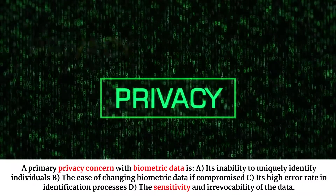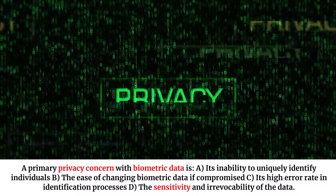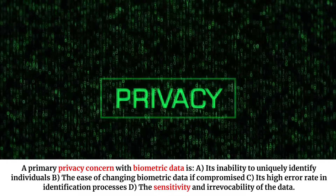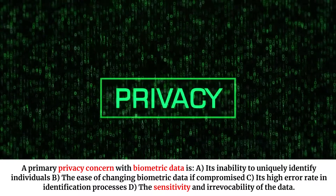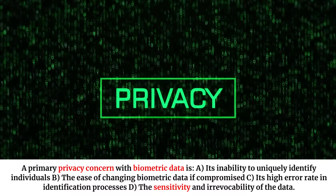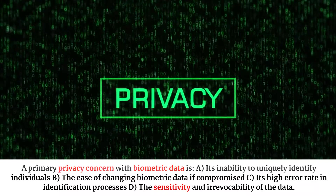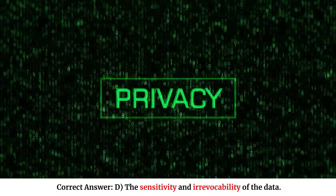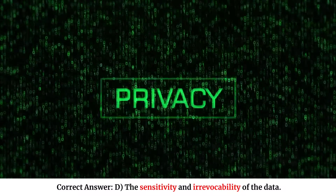A primary privacy concern with biometric data is: A. Its inability to uniquely identify individuals. B. The ease of changing biometric data if compromised. C. Its high error rate in identification processes. D. The sensitivity and irrevocability of the data. Correct answer: D. The sensitivity and irrevocability of the data.